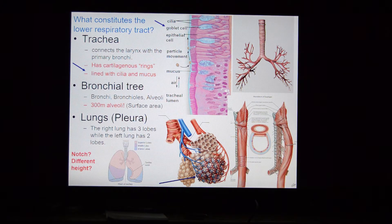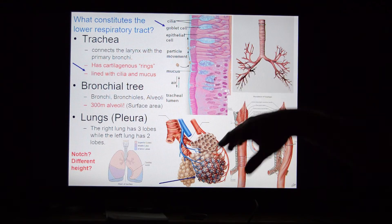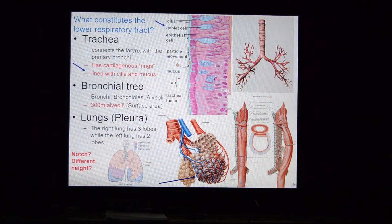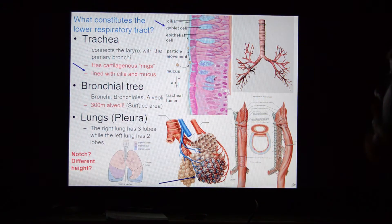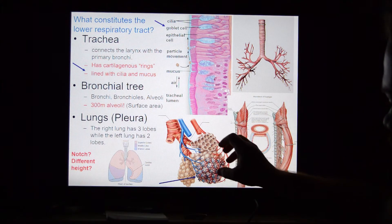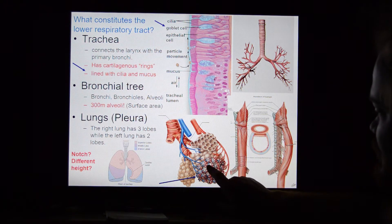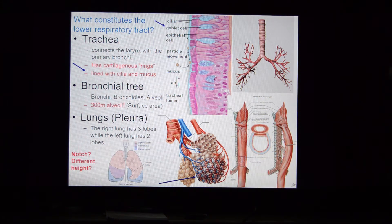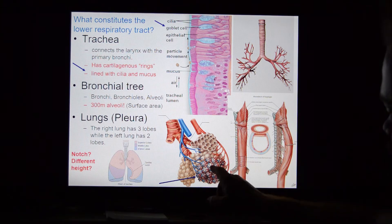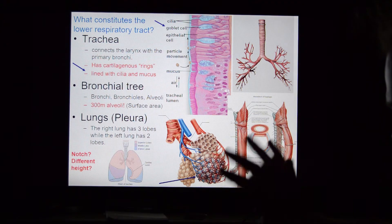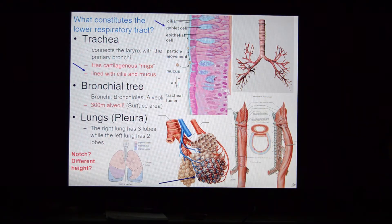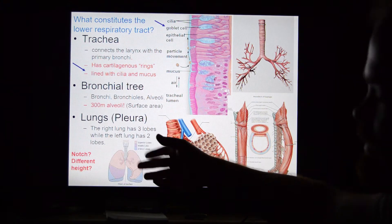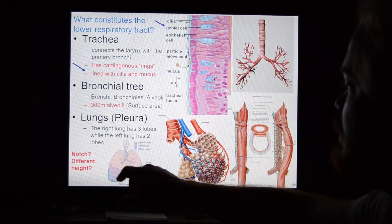Then we have the bronchial trees terminating in alveoli. The alveoli have an incredibly high surface area — that's the whole idea behind them. They are completely enveloped in capillaries. The thinnest tissue the body can make forms the alveoli walls. This is where gas exchange occurs.